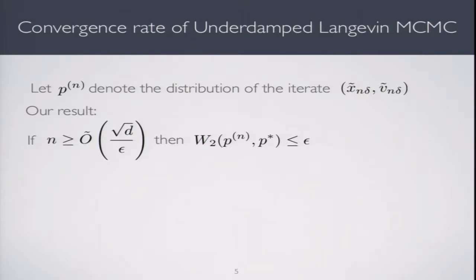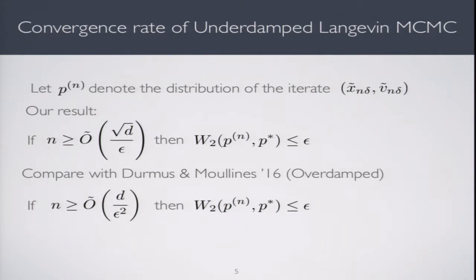This is the main theorem of our paper. Suppose you let p_n be the distribution of the nth iterate. If you want to guarantee the Wasserstein distance between p_n and p* is bounded by ε, then it suffices to take n number of iterations to be √d over ε.